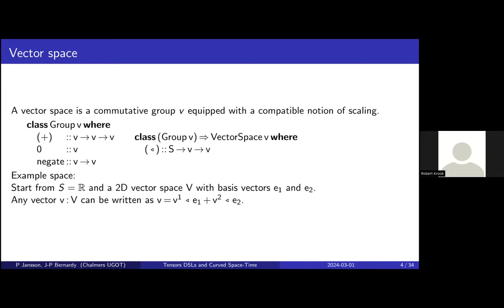A simple example: if scalars are real numbers and we have a 2D vector space V with two basis vectors e1 and e2, then any vector in this space can be written as a linear combination. Note: this is v indexed by one, not v to the power of one — sometimes indices are upper or lower depending on Einstein conventions. We scale basis vector e1 by the number v1 and basis vector e2 by v2 and add up the results.